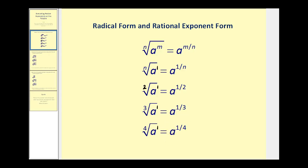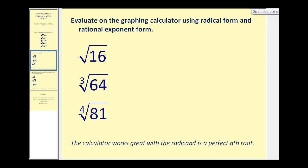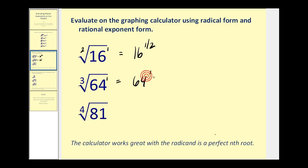Let's go ahead and take a look at some examples. If we want to evaluate these three radical expressions on the graphing calculator, we can do so in radical form or rewrite them in rational exponent form. The square root of 16 equals 16 to the one-half power. The cube root of 64 equals 64 to the one-third power. And the fourth root of 81 equals 81 to the one-fourth power.